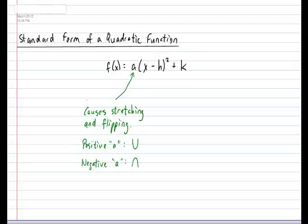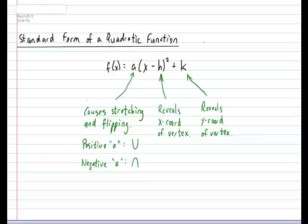The value of h and k together are very powerful in the standard form. Individually, the value of h reveals the x coordinate of the vertex and the value of k reveals the y coordinate of the vertex.